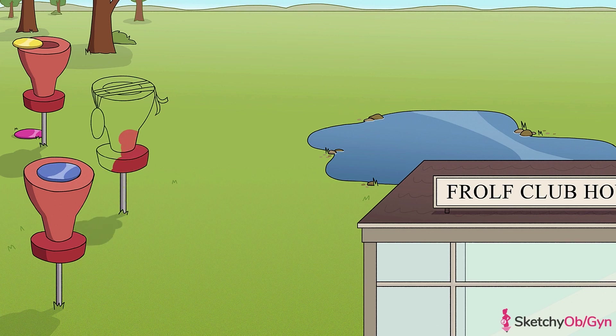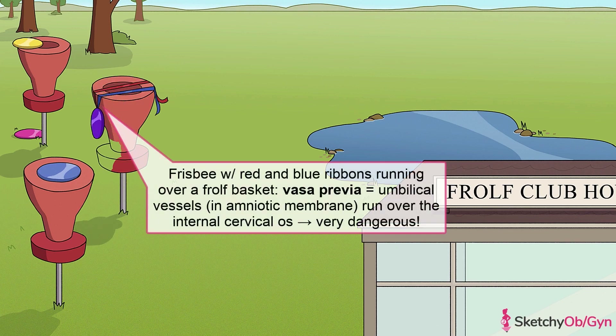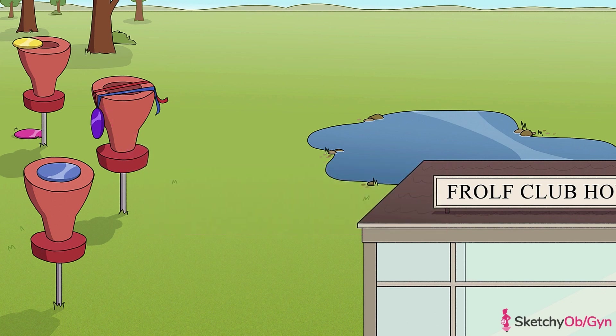Vasa previa is when part of the umbilical vessels run through the amniotic membrane and then run over the internal cervical os, just like these ribbons are doing to this third frolf basket. Vasa previa is a super dangerous condition because these vessels aren't protected by the cushiony umbilical cord and its Wharton's jelly, so it's very easy for them to tear open, which would cause fetal exsanguination and potentially fetal death.